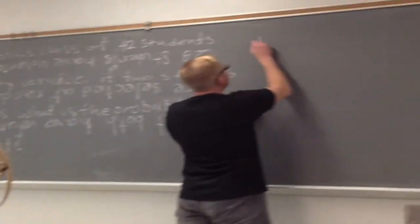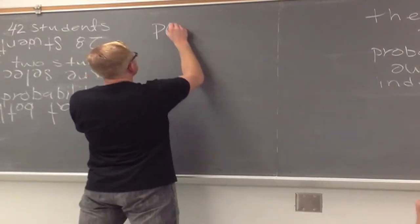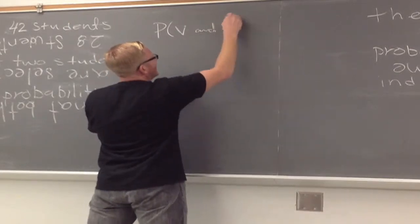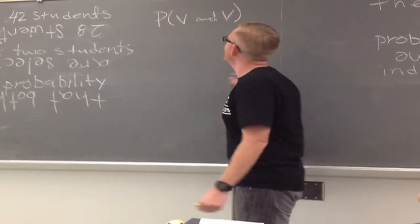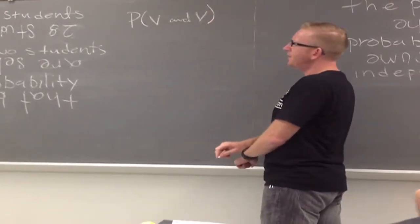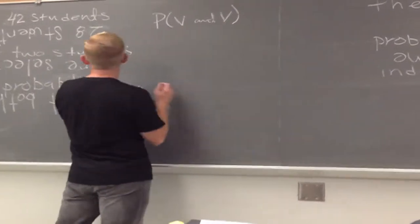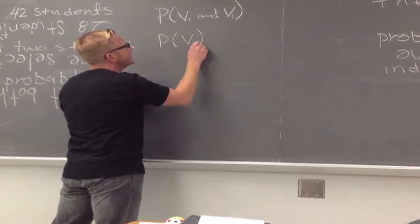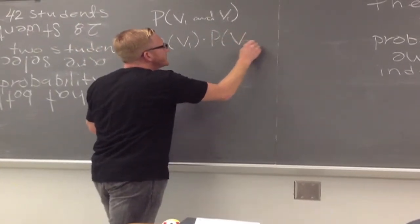So we're looking for the probability of volunteered and volunteered. Let's assume that they're independent. That's the probability of the first one volunteered times the probability that the second one volunteered.